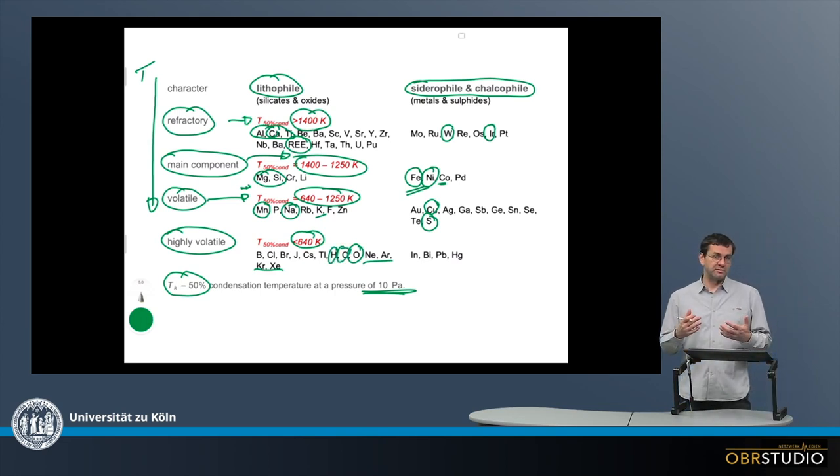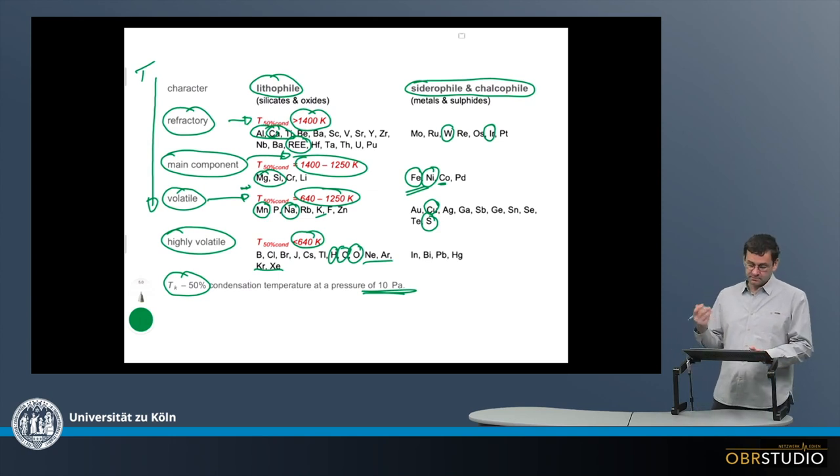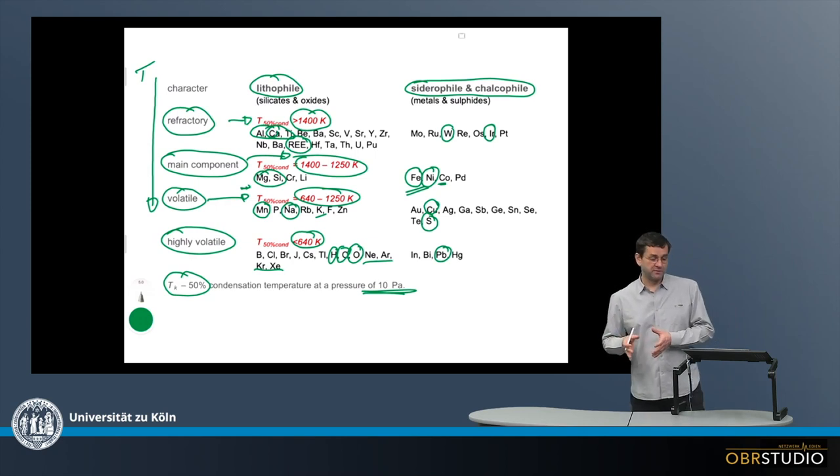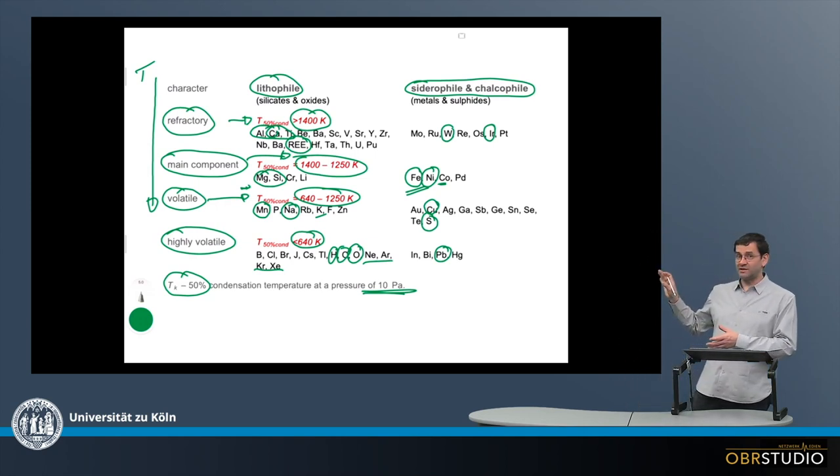This would form water, for example, carbonates, something like that. For the siderophile elements, the most important is lead, as this is a very important element for chronology. It's quite important to know that this is a highly volatile element because this might easily disturb a chronometer.